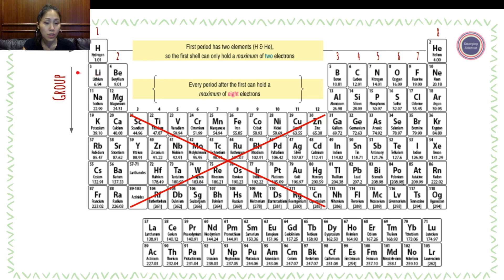The next period is period 2, and period 2 contains eight electrons. One, two, three, four, five, six, seven, eight. And then every period after that also contains eight electrons. So again, the first shell only has two electrons and every shell after that has eight electrons maximum.